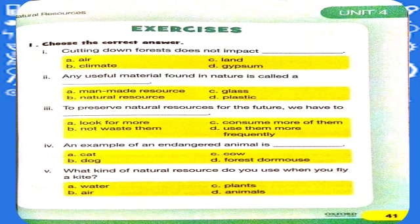Now we are going to start our exercise. Question number one is choose the correct answer. The first question is: cutting down forests does not impact dash. A. Air. B. Climate. C. Land. D. Gypsum. And our answer is D — Gypsum.